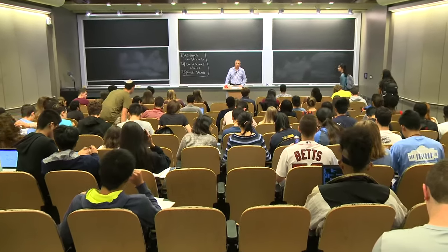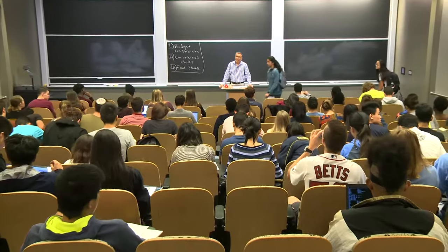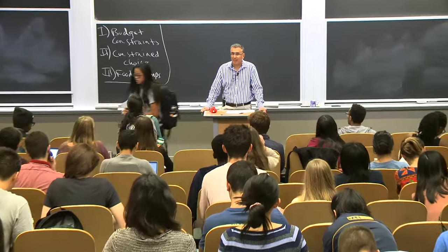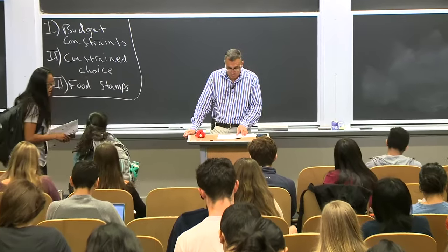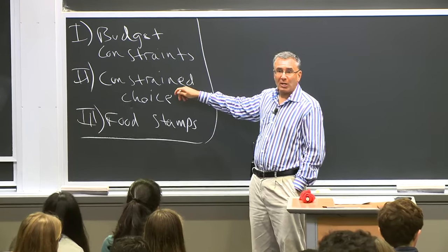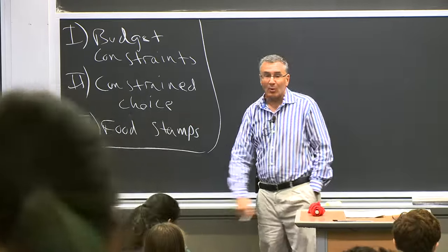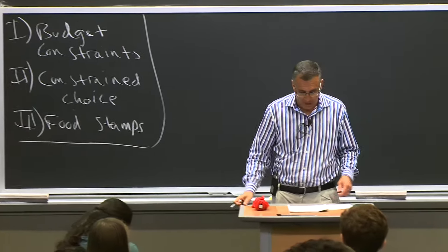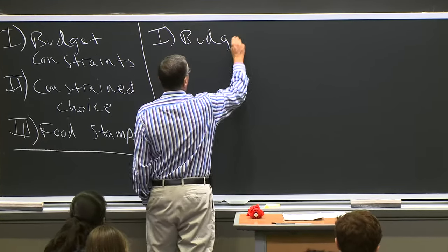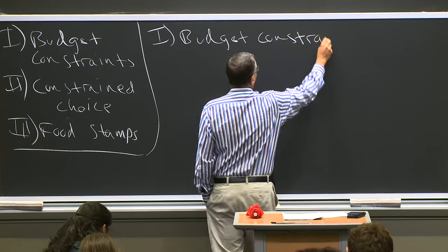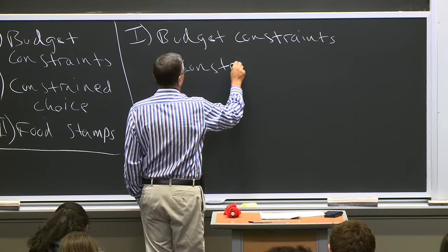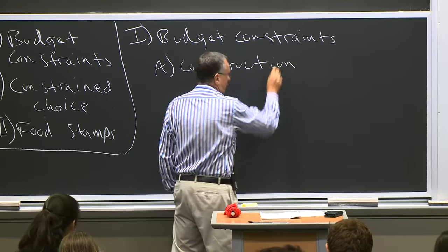Today we're going to continue our discussion of consumer choice and talk about what happens when we take that unconstrained choice we discussed on Monday and impose budget constraints. We'll talk about what budget constraints are, how consumers make constrained choices, and then end with an example of food stamps. Let's start by talking about budget constraints and their construction.